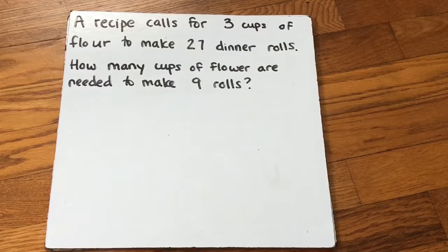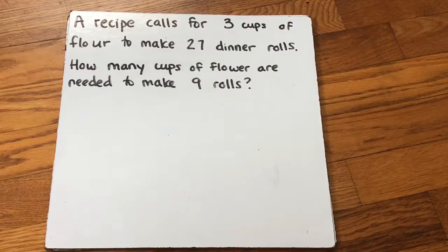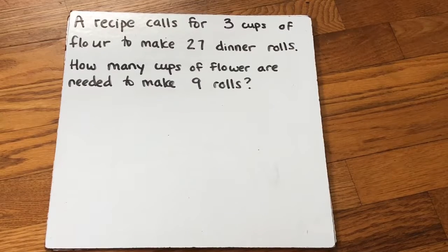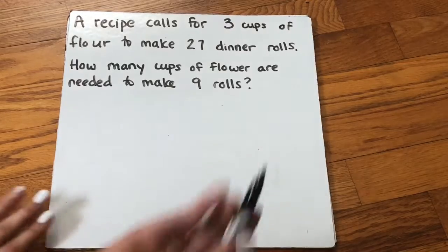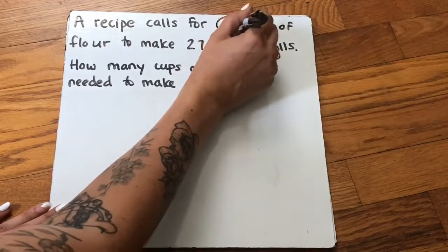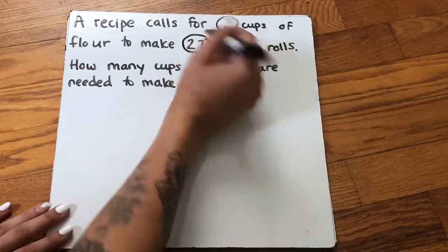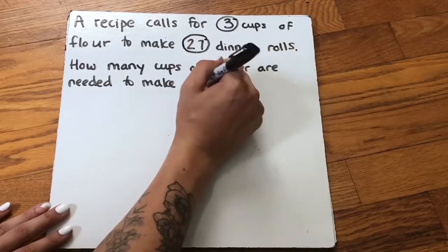So let's look at this word problem. We're going to read it, annotate it, and then solve to find the proportion. A recipe calls for three cups of flour to make 27 dinner rolls. How many cups of flour are needed to make nine rolls? My annotation guide tells me I need to first circle all my numbers: three, 27, and nine.